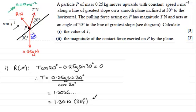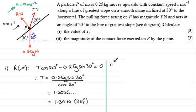Now for part two: finding the magnitude of the contact force R. To do this, we resolve perpendicular to the plane, taking away from the plane as positive. You could take into the plane as positive — it doesn't matter, you'll get the same result. All of R acts away from the plane, so that contributes simply R.